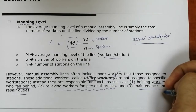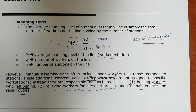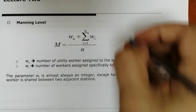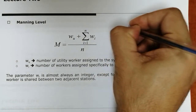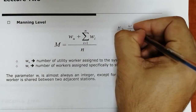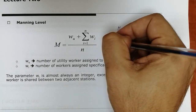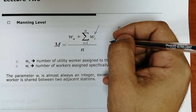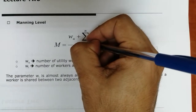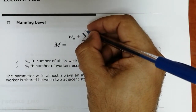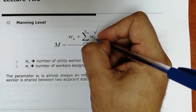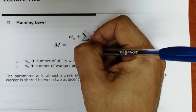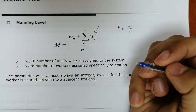Utility workers even do maintenance and repair duties. The equation incorporates W divided by N — number of workers over number of stations — for the manning level. If we incorporate the number of utility workers, it's the total number of utility workers over the whole line divided by N, the number of stations.